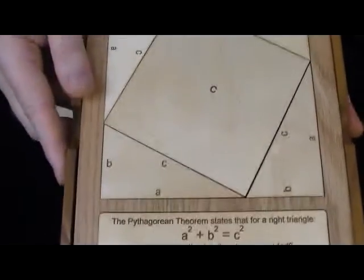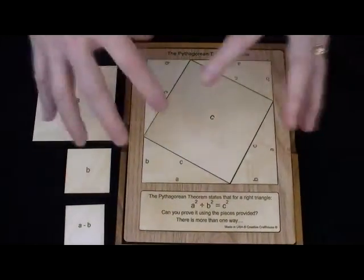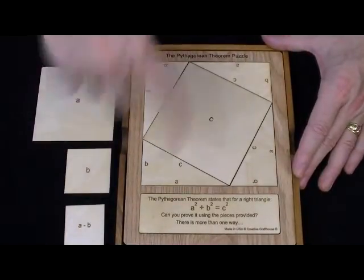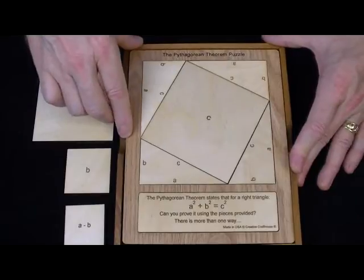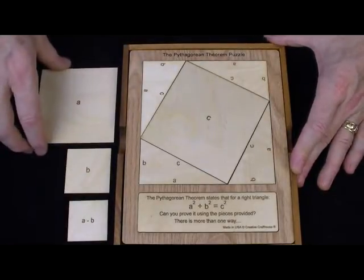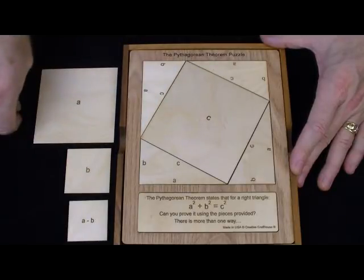Now, can we prove that? Well, that becomes the prime challenge of this puzzle. You can also use the puzzle to try to make different squares using eight different pieces here, but can you use the puzzle to prove the Pythagorean Theorem? And I will provide an instruction sheet that will show you three ways that this can be done, and there are actually many more.